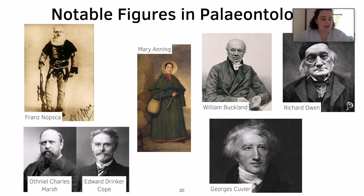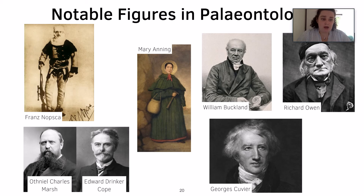He named the island that was in Europe during the Mesozoic as the Isle of Hațeg. And then we have Cope and Marsh, who are extremely well known as the leaders of the Bone Wars that happened in the US.